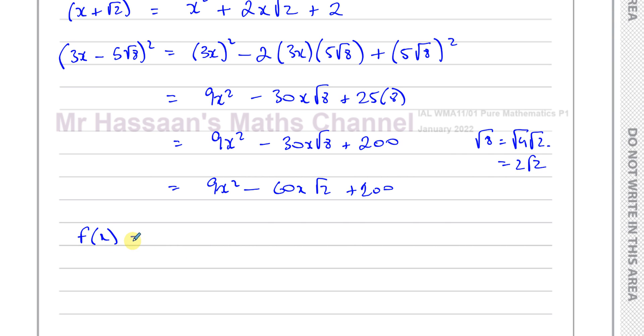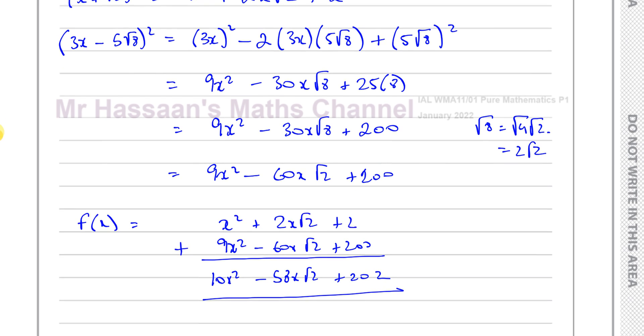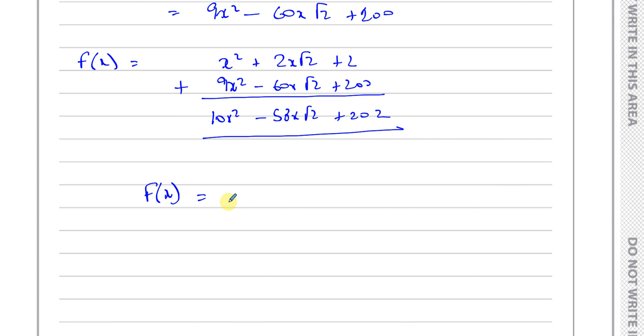So f(x) is equal to x² + 2x√2 + 2 plus 9x² minus 60x√2 + 200. Now, I've got them in terms of what I need. So this is going to give me 10x² minus 58x√2 + 202. So I can say f(x) equals 10x² - 58x√2 + 202. And that's the answer to part 1 of this question. And now on to part 2.